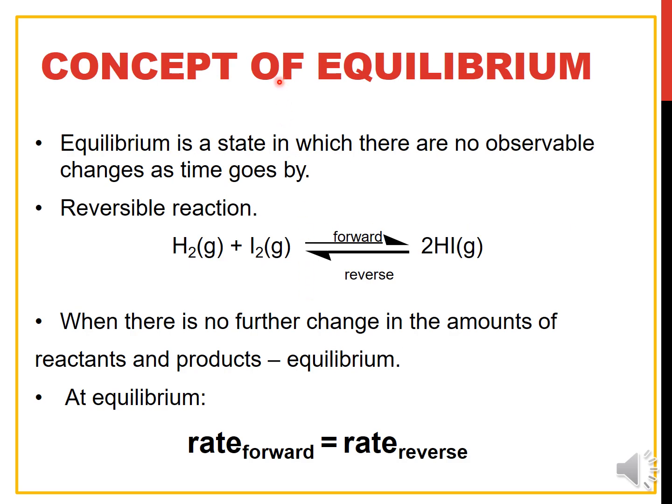So this is the main part for this session which is the concept of Equilibrium. What is Equilibrium actually? It is a state in which there are no observable changes as time goes by. And it mostly happens in Reversible Reactions. The chemical equilibrium is achieved when the rate of forward reaction is equal to the rate of reverse reaction and when there is no further change in the amount of reactants and products. The change in the amount of reactants and products refers to the concentration of the reactants and concentration of the products.